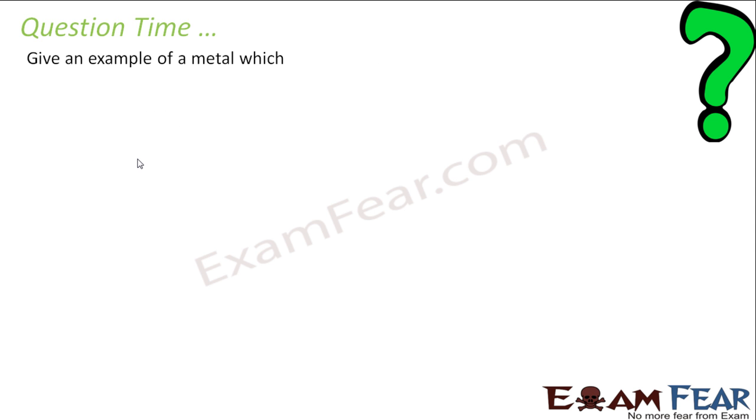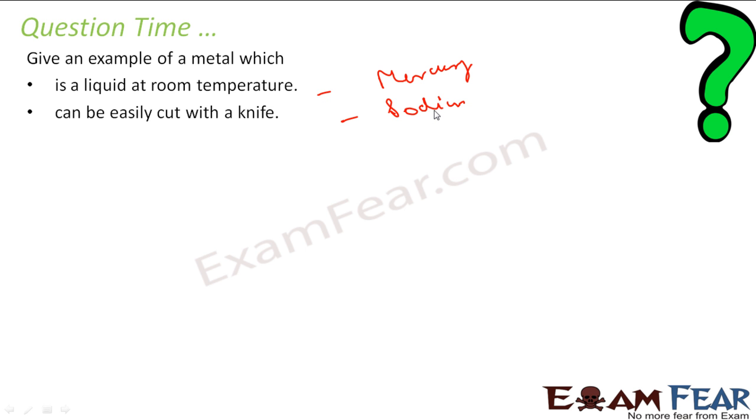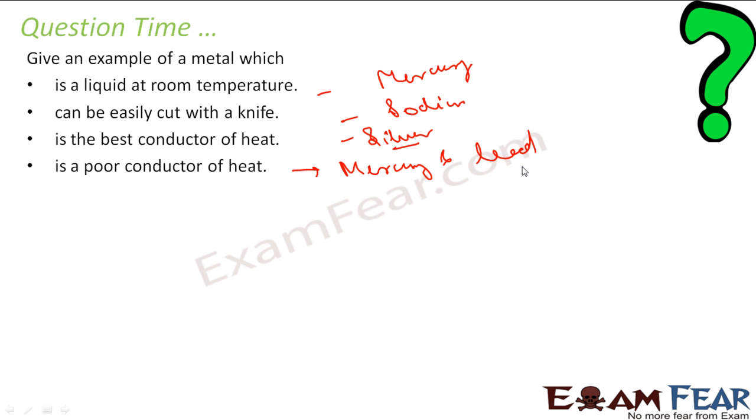Now, it is the question time. Give the example of metal which is liquid at room temperature. This, we know, it is a very simple answer. The answer is mercury. Mercury is liquid at room temperature. Give the example of metal that can be cut easily with knife. We know it is sodium. We can cut with knife. In fact, potassium also we can cut with knife. Which is the best connector of heat? We have told that silver is the best conductor of heat. And poor conductor of heat. We have told that there is an exception. And that is mercury and lead. They are poor conductor of heat. There is an exception to that. Generally, most of the metals are good conductor of heat. But mercury and lead are exception to that.